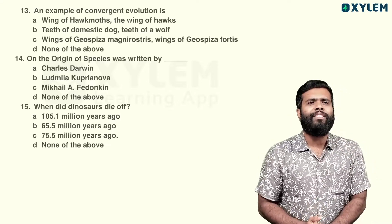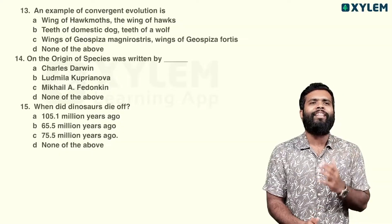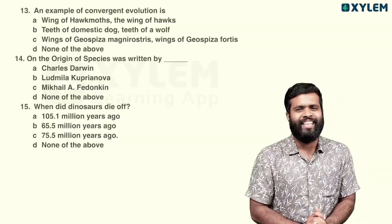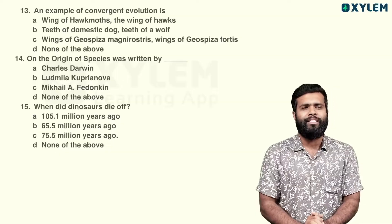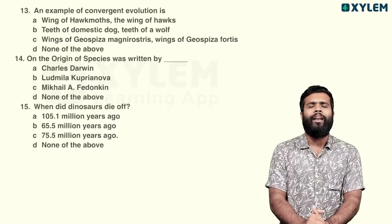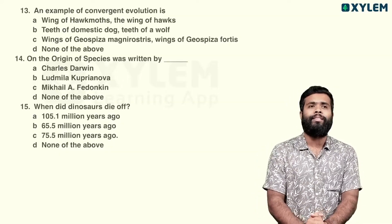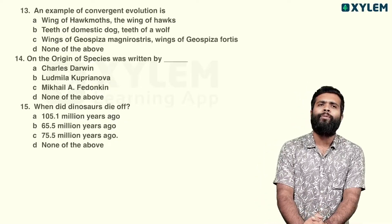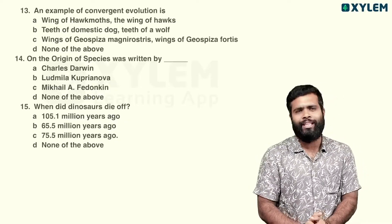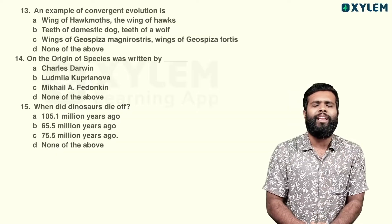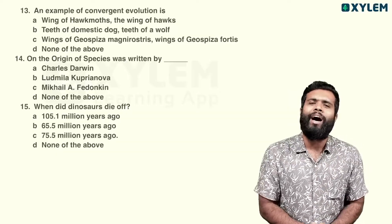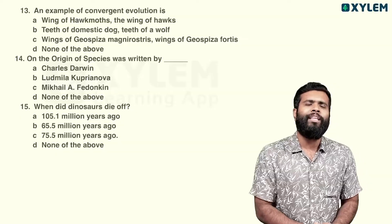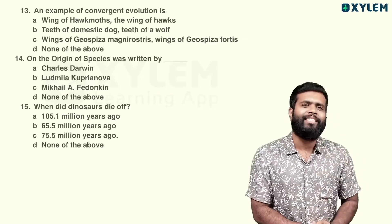When did dinosaurs die off? There was a mass extinction — the largest extinction — approximately 65.5 million years ago. So option B is the answer.